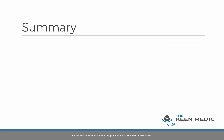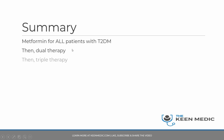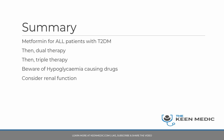To summarize: metformin for all patients with type 2 diabetes where HbA1c is not within target. Then dual therapy — metformin plus something else. Then triple therapy — metformin plus something else plus something else. Always be aware of hypoglycemia for every patient who presents with it, has had it in the past, or has risk factors such as being a lorry driver. Consider renal function before starting medications, and remember the important side effects we've covered.